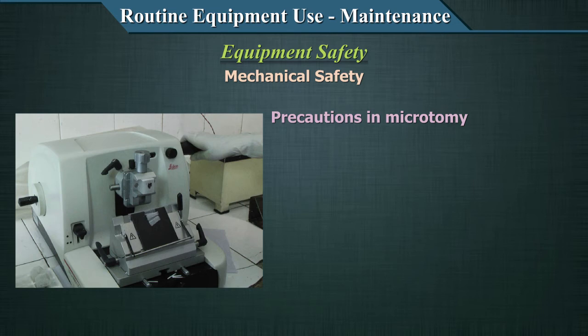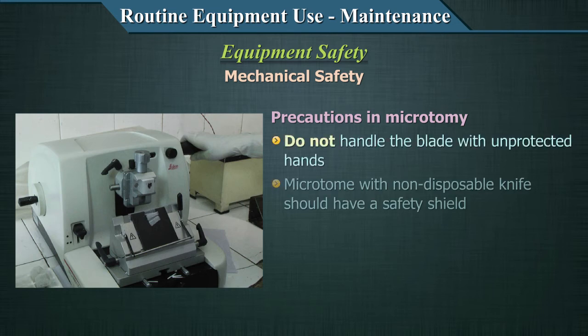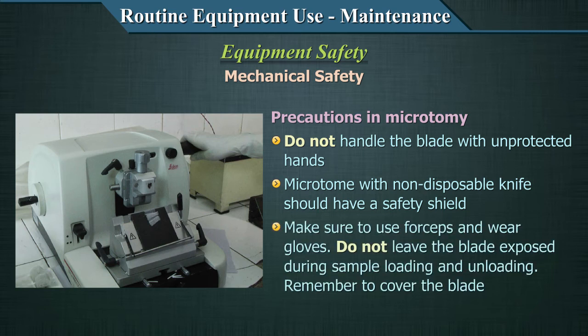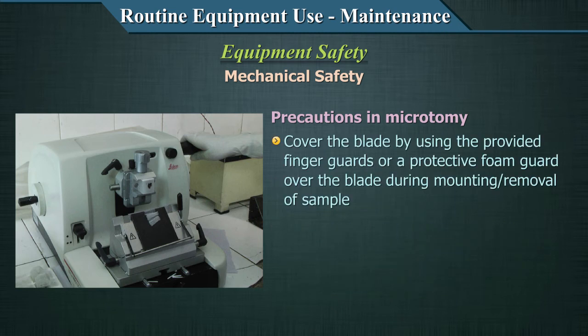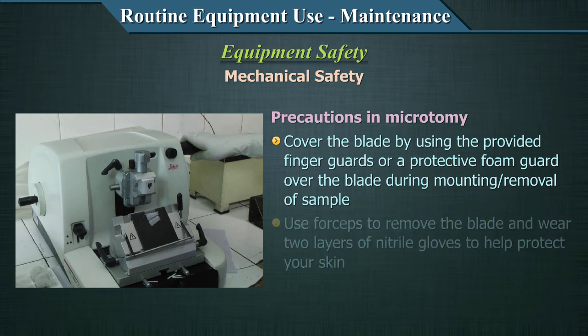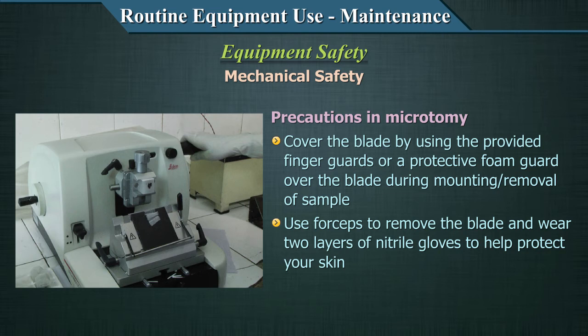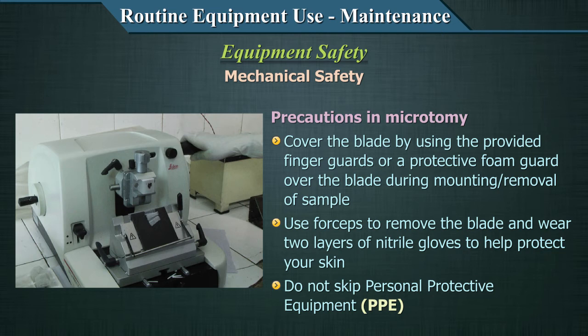For microtome safety: do not handle the blade with unprotected hands. Microtomes with non-disposable knives should have a safety shield. Use forceps and wear gloves. Do not leave the blade exposed during sample loading and unloading — always remember to cover the blade using provided finger guards or protective foam guards during mounting and removal of the sample. Use forceps to remove the blade and wear two layers of nitrile gloves to protect your fingers.